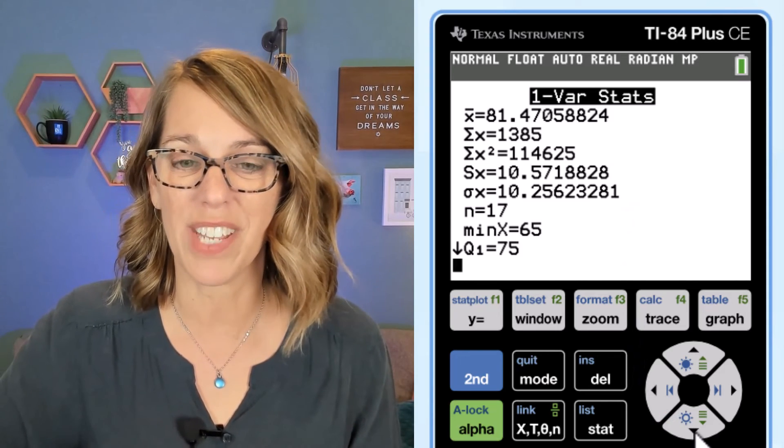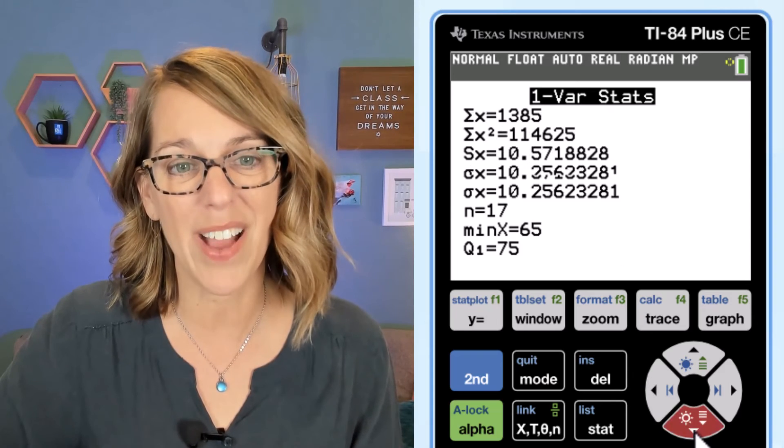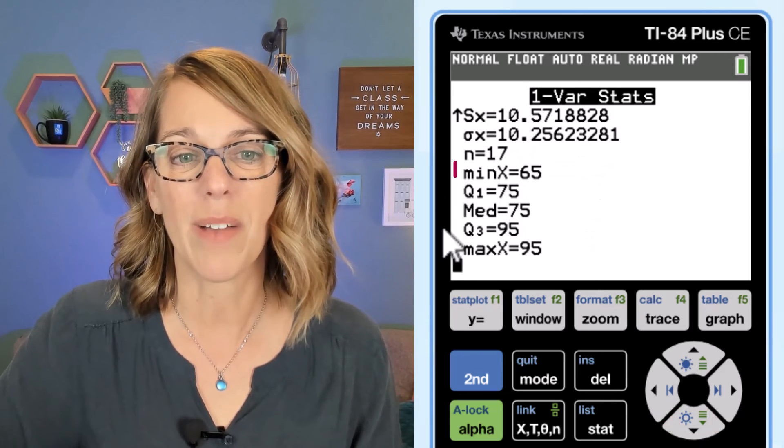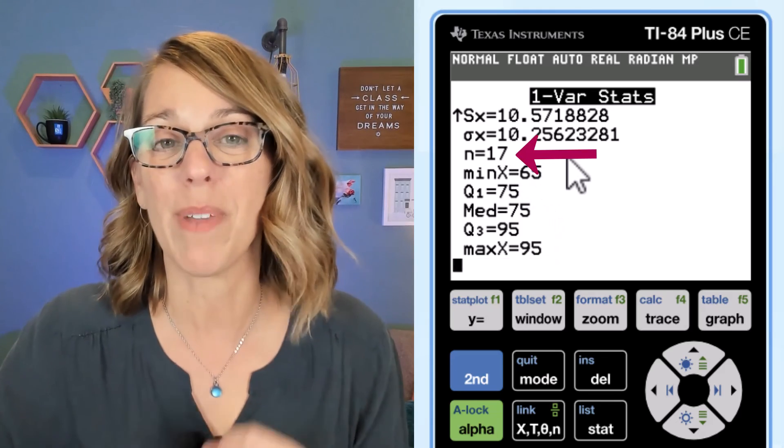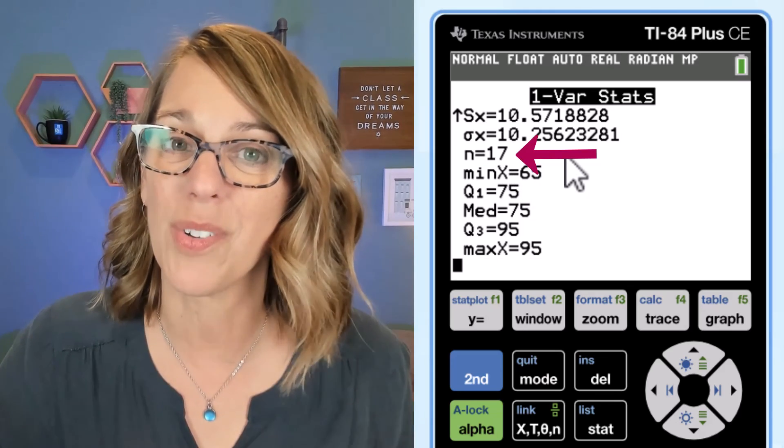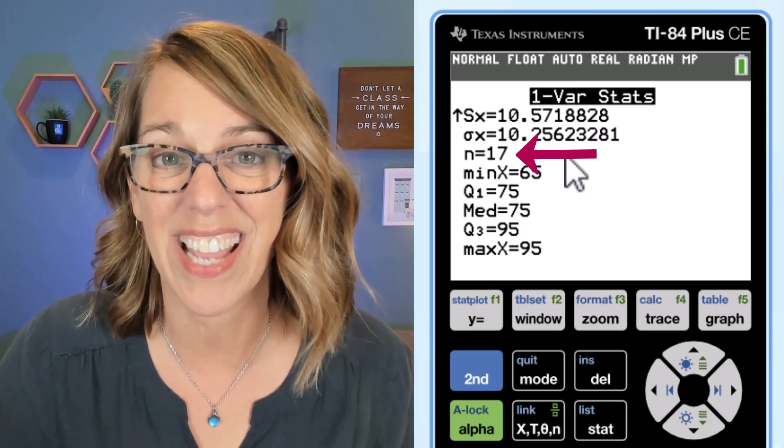And if I scroll down even further, I'm going to use my down arrow to get to the rest of my data. I've got my five number summary and up above that, I've got my value N. Remember I said I was doing this for 17 data values.